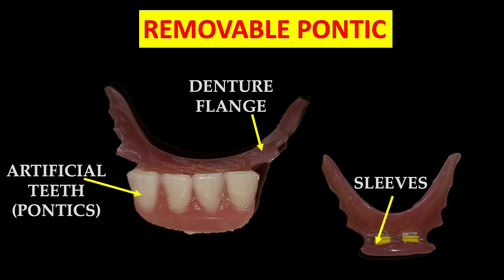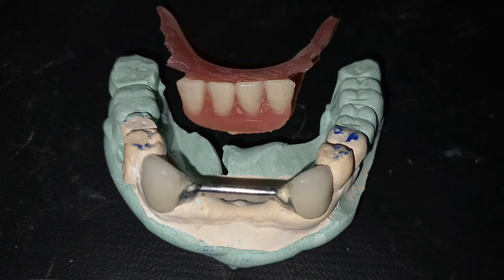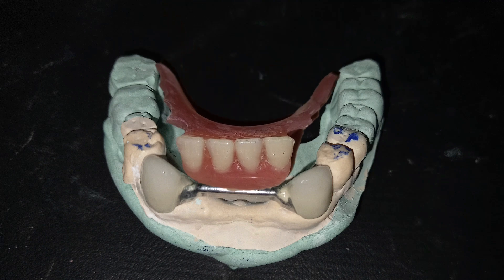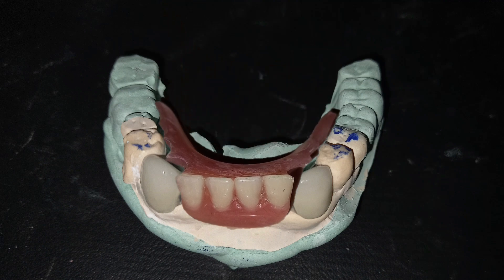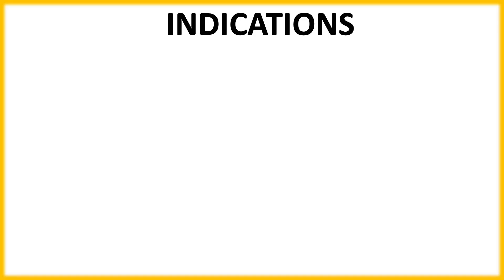Look at the figure: we have a fixed abutment retainer with a bar, over which the removable part is fixed. As you can see in the figure, with the help of sleeves the removable part is secured over the bar.